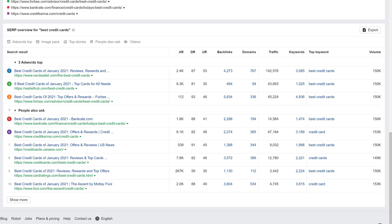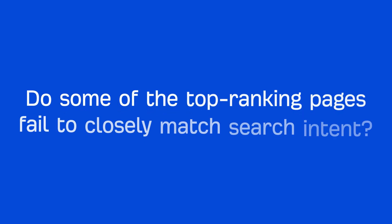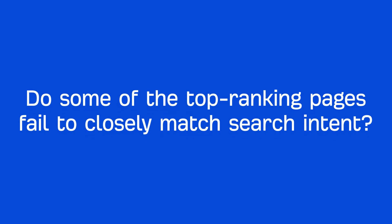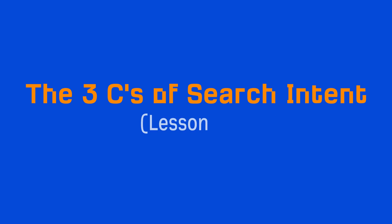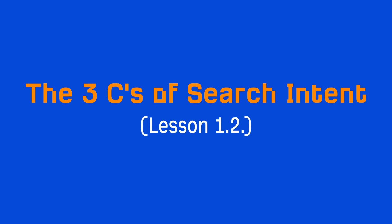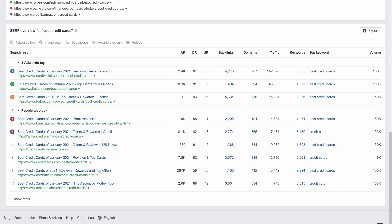Let's start with search intent. The first thing you need to do is look at the SERP and ask yourself: do some of the top ranking pages fail to closely match search intent? To find this out, you can go through the three C's of search intent as we discussed in lesson 2 of this module. By the looks of it, they're all listicle blog posts using the freshness angle, so they do match it.